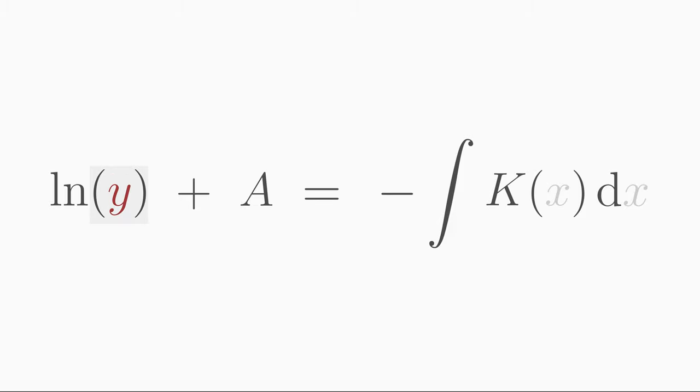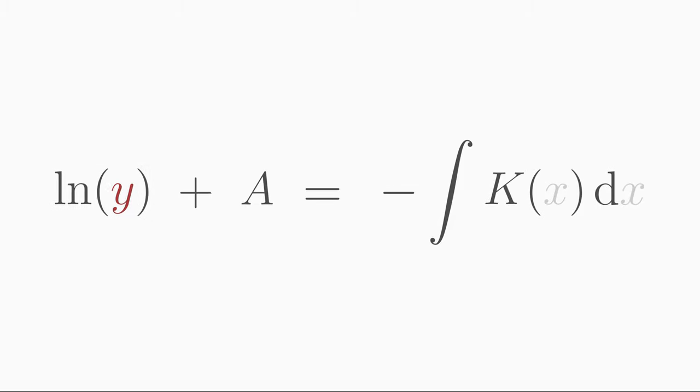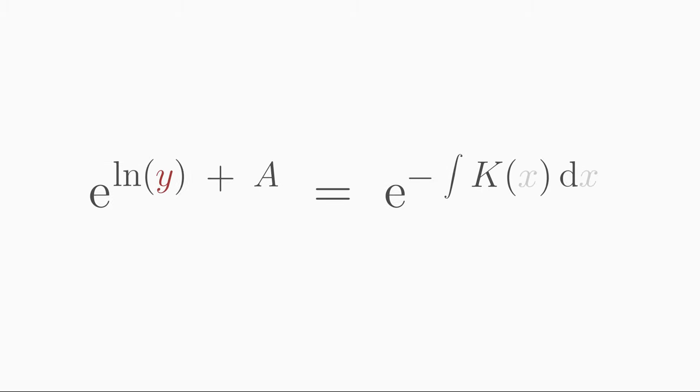Now you have to solve for the function y. Use the exponential function on both sides. You can split the sum in the exponential term on the left side into a product where e to the power of ln of y is simply y.